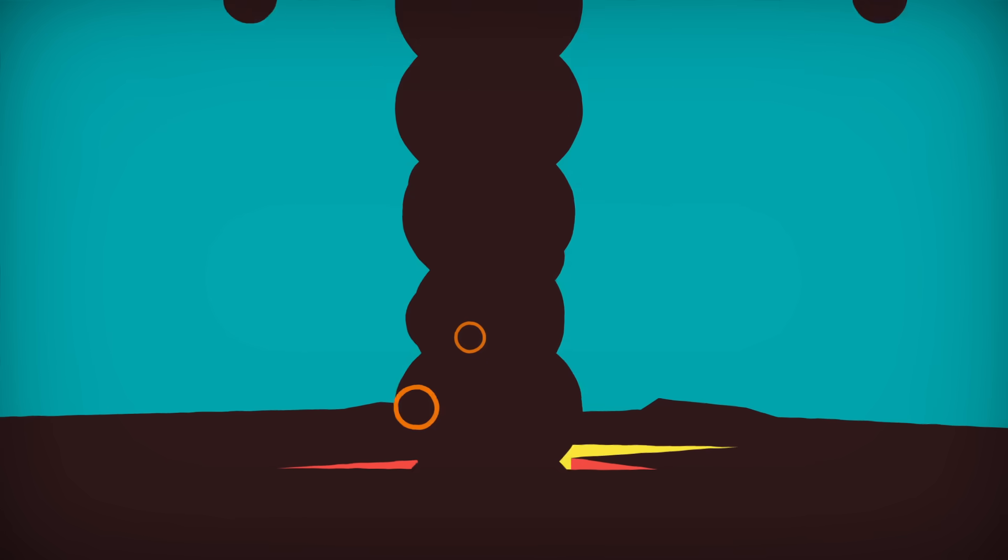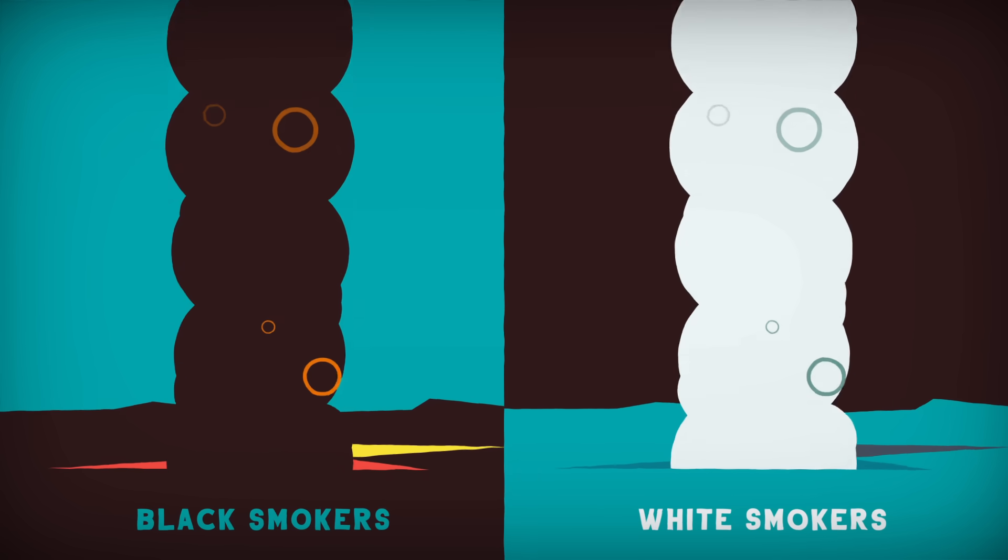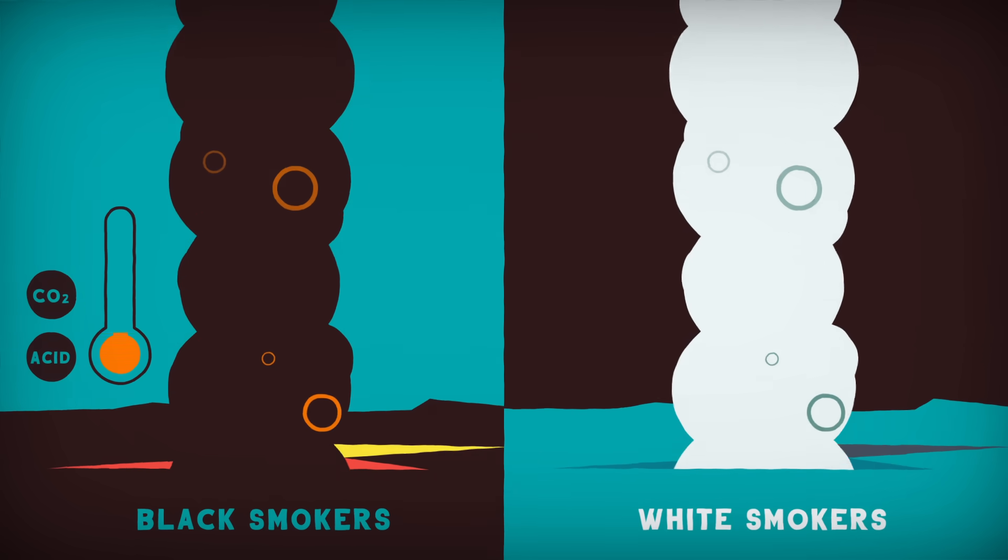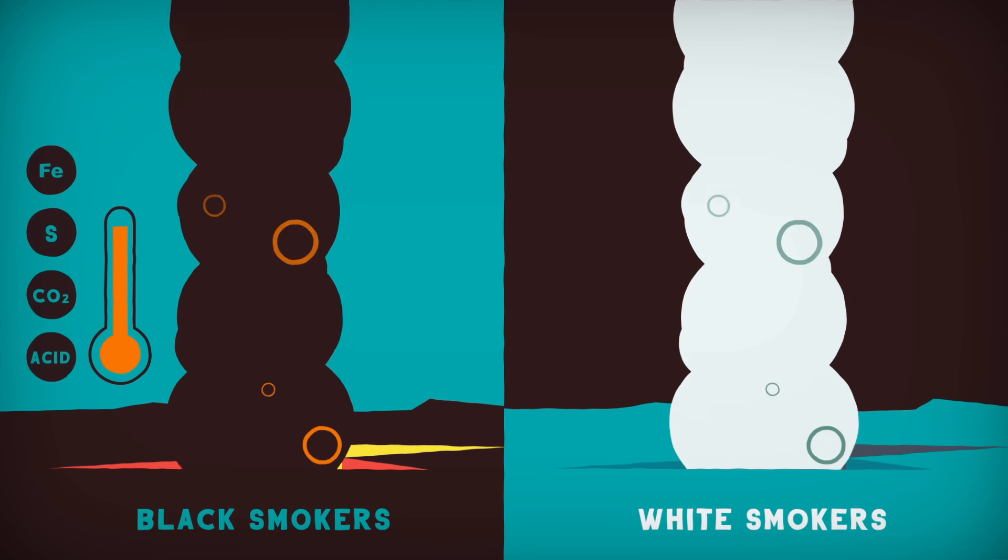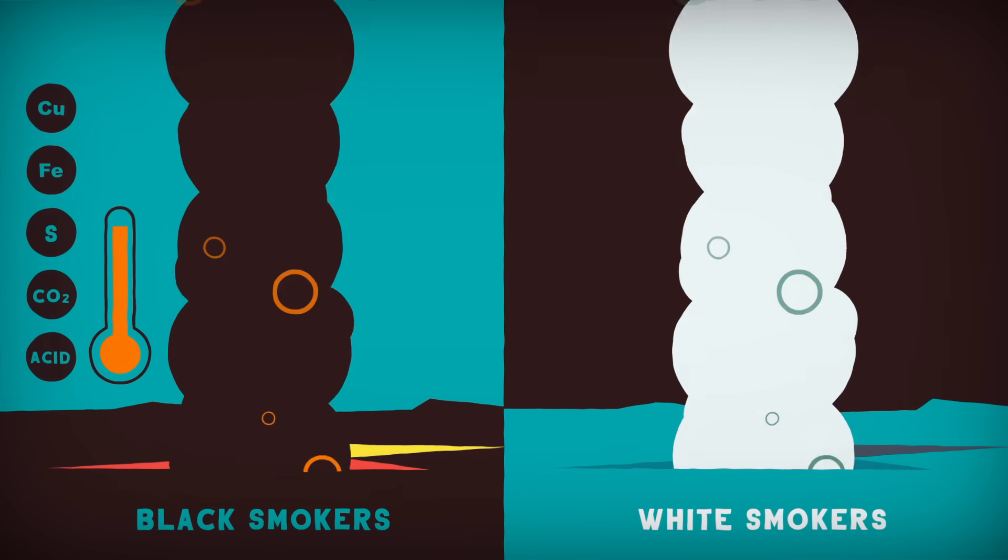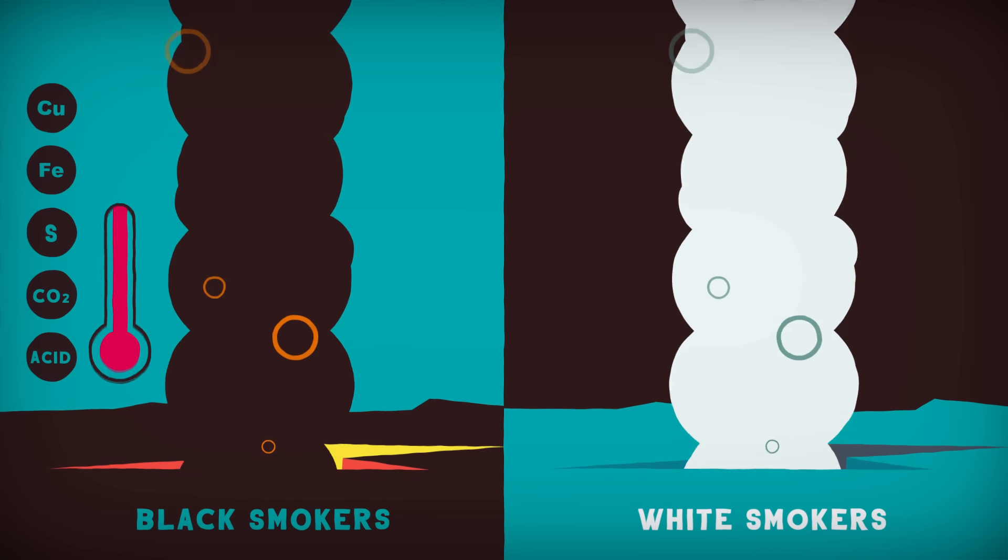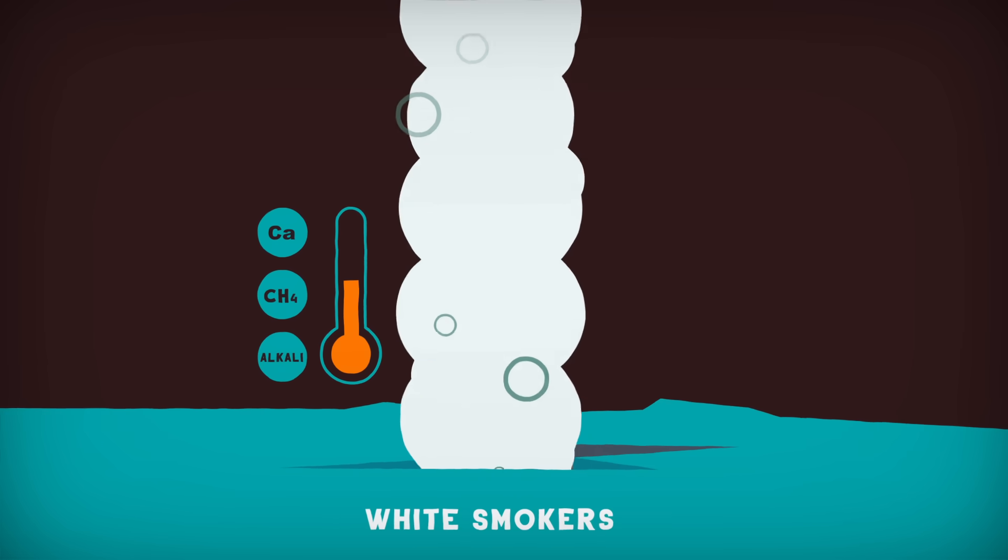There are two kinds of hydrothermal vent—black smokers and white smokers. Black smokers release acidic, carbon dioxide-rich water heated to hundreds of degrees Celsius and packed with sulfur, iron, copper, and other metals essential to life. But scientists now believe that black smokers were too hot for LUCA, so now the top candidates for the cradle of life are white smokers.